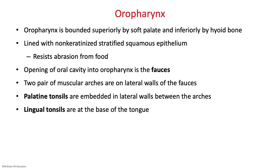The oropharynx is right behind your oral cavity. It has two pairs of muscular arches on the lateral walls, and the palatine tonsils are embedded in those lateral walls between the arches.